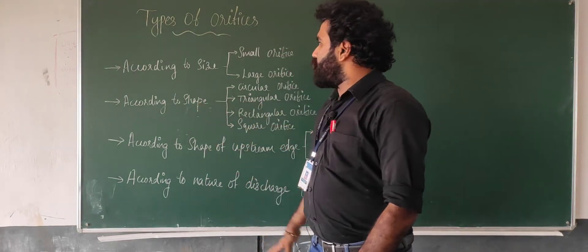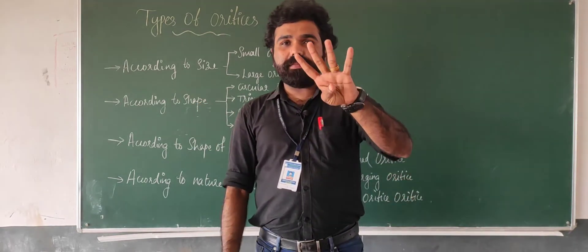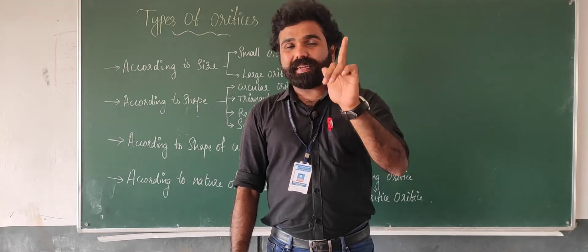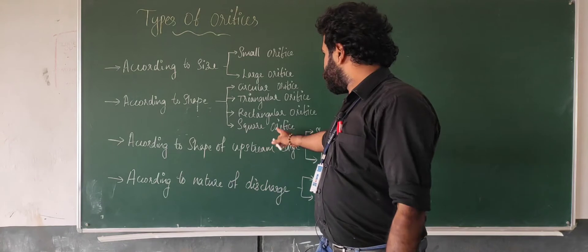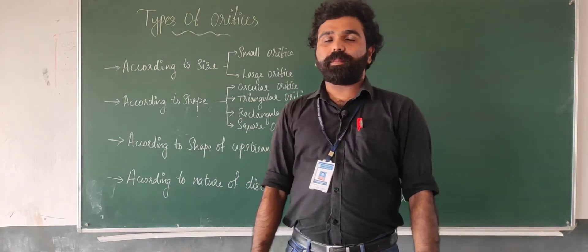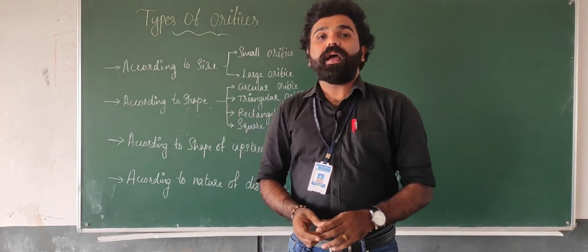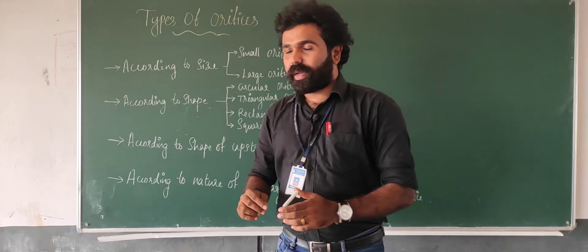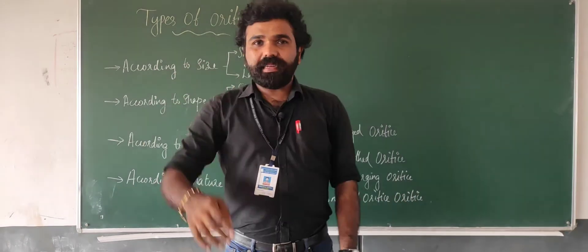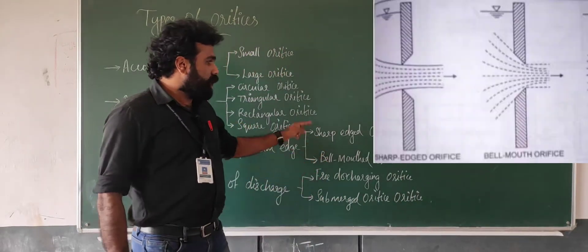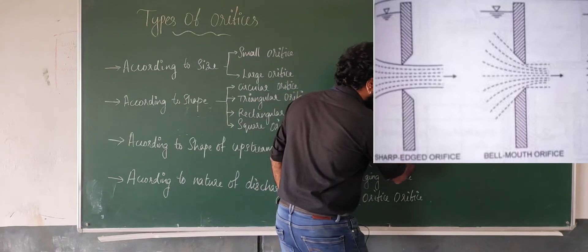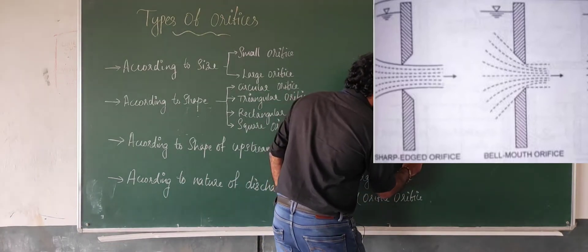According to the shape, we are going to show you circular, triangular, rectangular and square types of orifice. Next, according to the shape of the upstream edge — the shape of the upstream edge — you have a sharp edge and a bell mouth. The sharp edge is sharp and the bell mouth is straight.